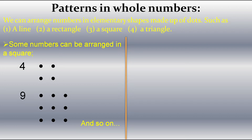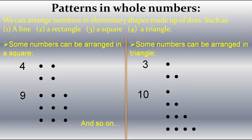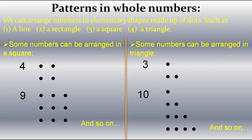Now let's talk about triangles. Some numbers can be arranged in a triangle. These numbers start from three dots, as three dots can make the shape of a triangle. Same way, ten dots can make a shape of triangle and so on. The numbers whose dots can make a shape of triangle are called triangular numbers.